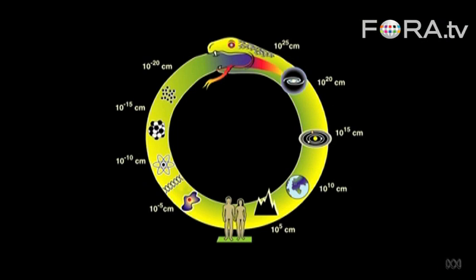If I needed a logo for my research group, I'd choose this — an Ouroboros. This image depicts rather nicely the interconnectedness of the microworld on the left and the cosmos on the right. The inner space of atoms and the outer space of the universe, and there are links between small and large, left and right.